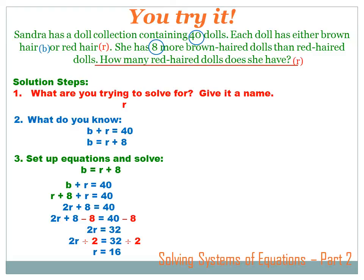Let's first combine our R's: 2R plus eight equals 40. I've got to get rid of that plus eight, so I'm going to subtract eight from both sides of the equation. Those eights will cancel each other out and leave just 2R, and 40 minus eight is 32. Now I've got to get rid of that two times, so I divide by 2. If I divide the left side by 2, I've got to divide the right side by 2. The twos cancel each other out and leave just R. 32 divided by 2 equals 16.